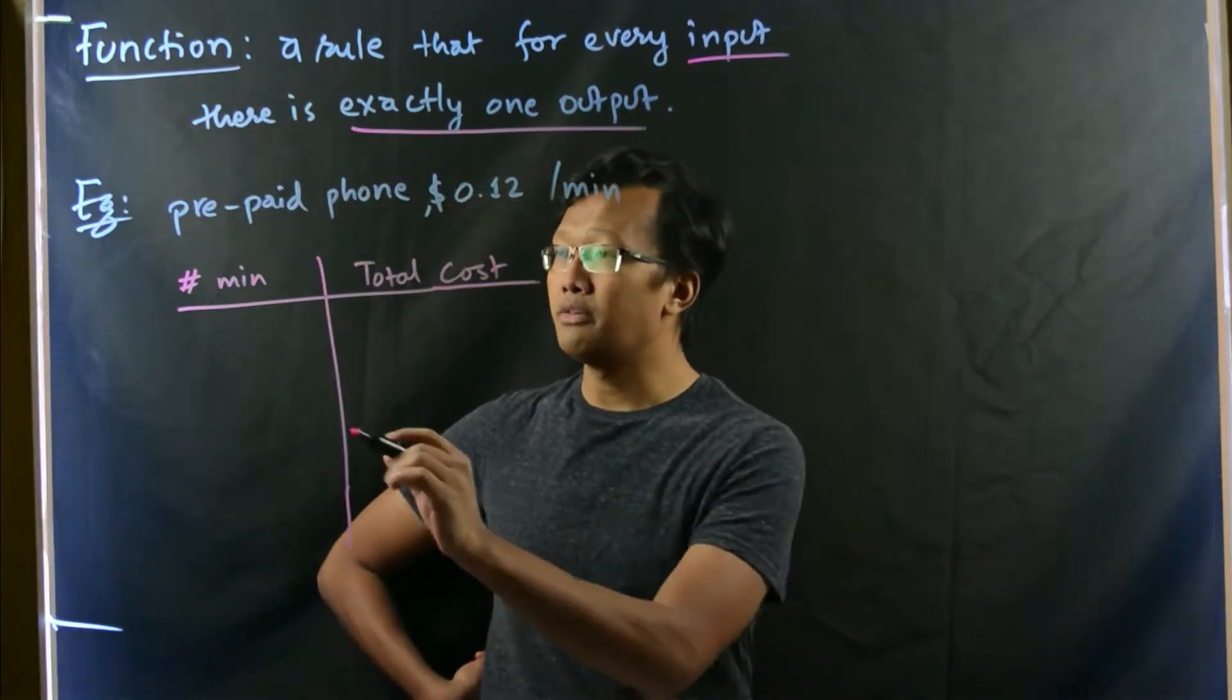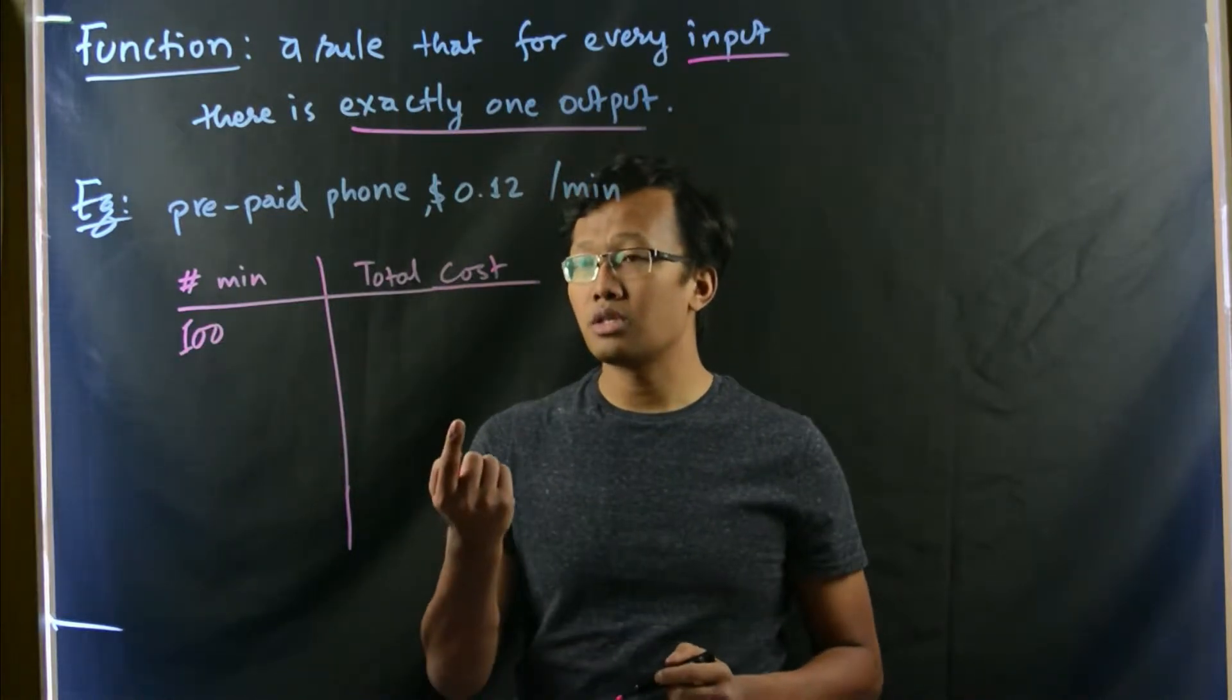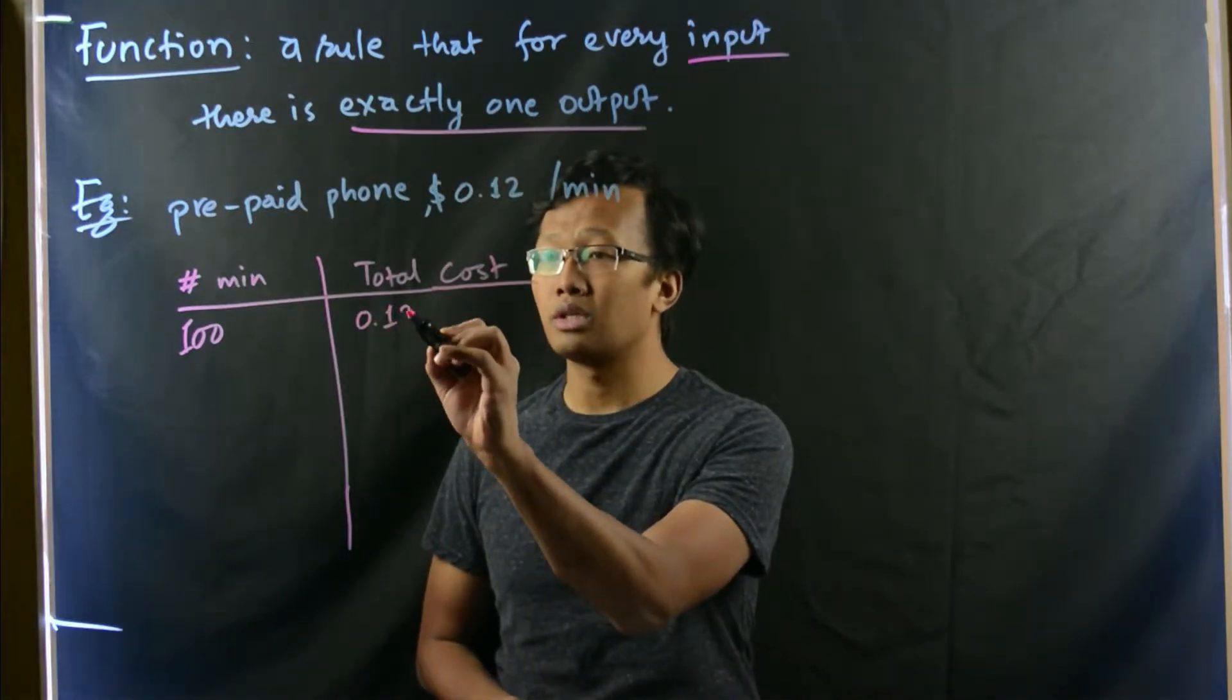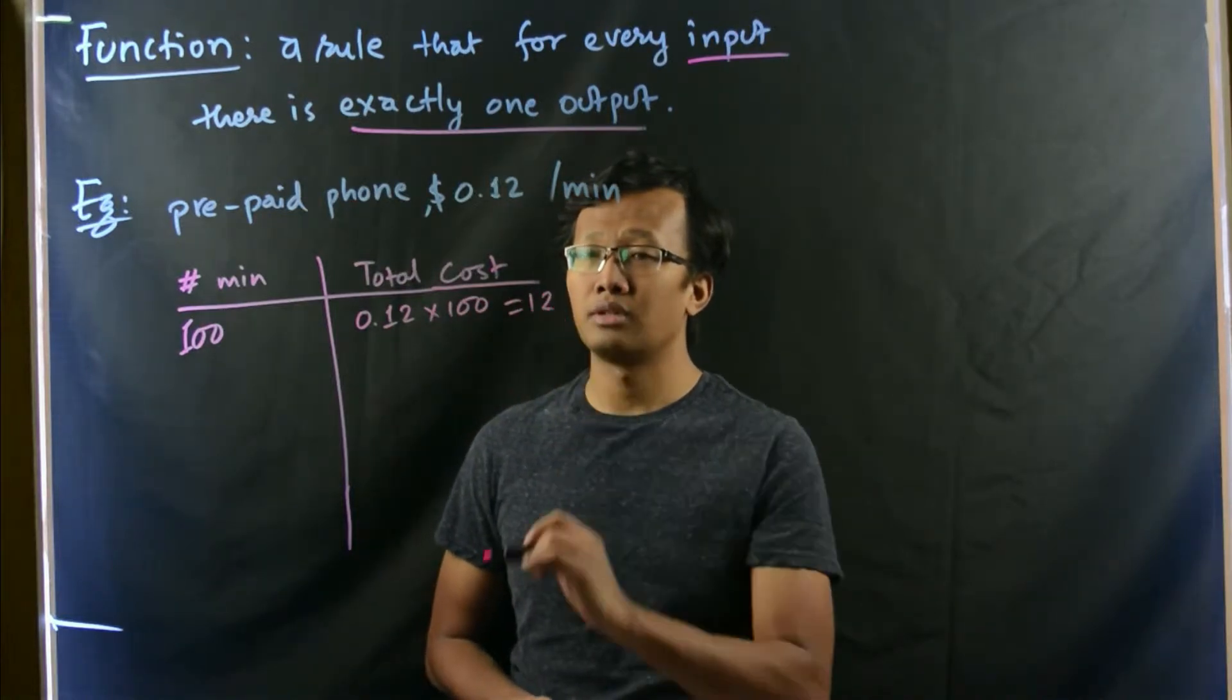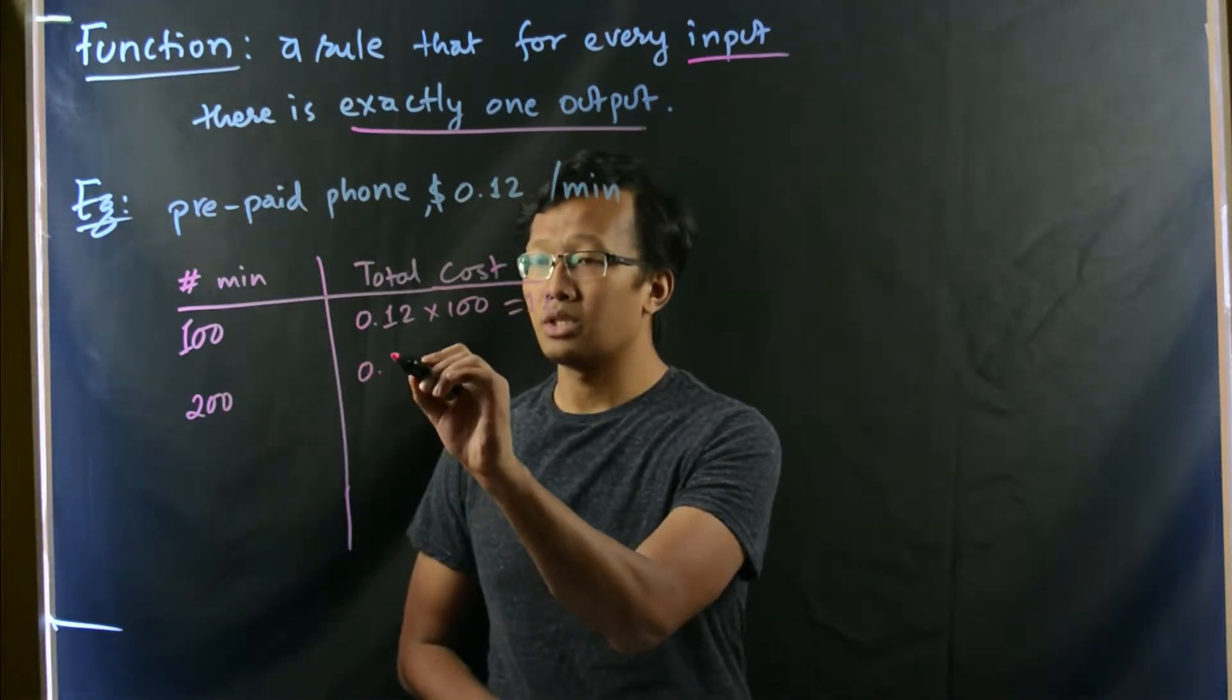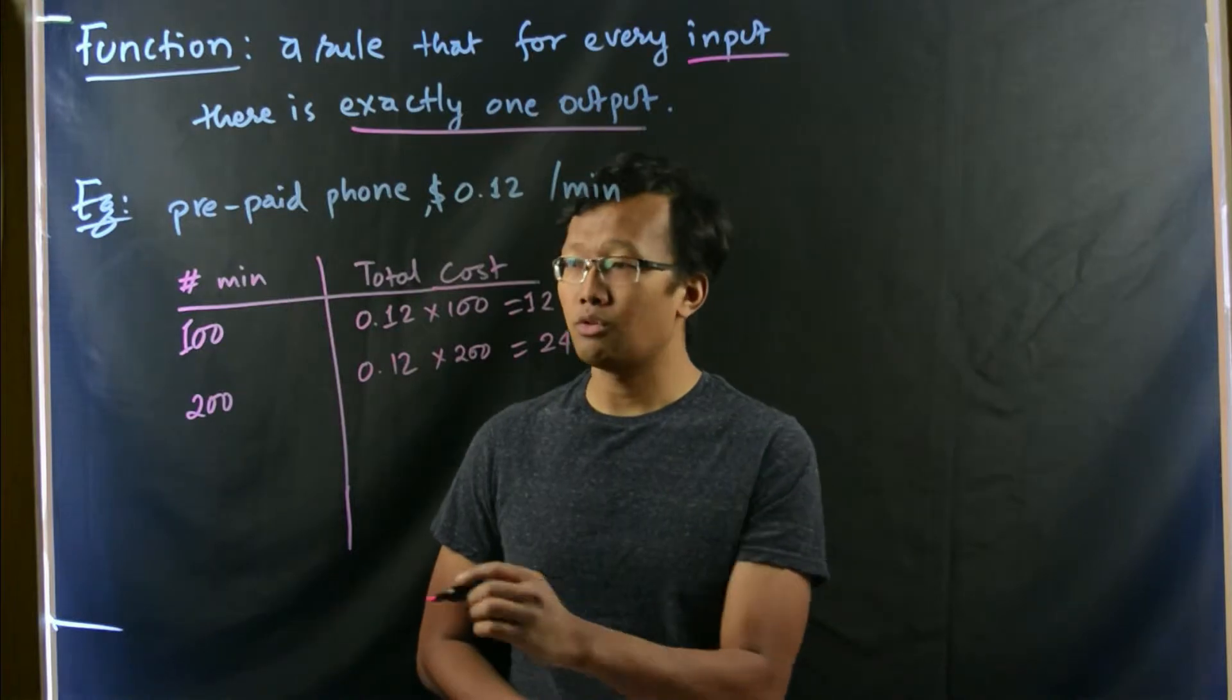Here, you can see that if you call for, let's say, 100 minutes in a month, then the total cost that you need to incur is 0.12 dollars times 100, which is simply $12. If you go for 200, then this would be 0.12 times 200 equals to $24.